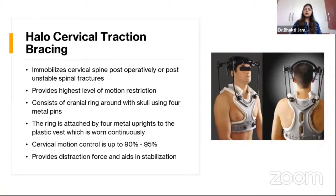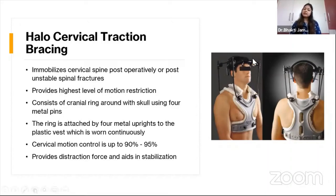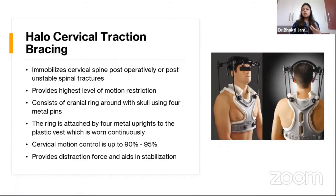Next is halo cervical traction bracing — mostly a medical device that immobilizes the cervical spine post-operatively for unstable spinal fractures. It provides the highest level of range of motion restriction, consisting of a metal ring with four metal straps and four metal uprights attached to a plastic vest worn continuously, providing 90–95% range of motion control. It also provides a distraction force that reduces pressure over the cervical spine for good stabilization.